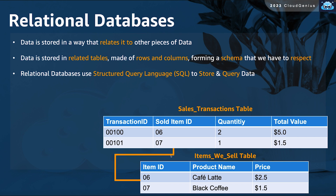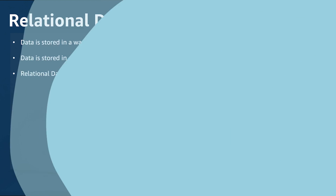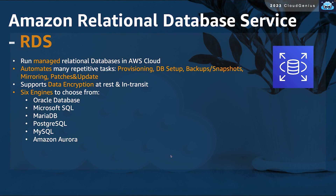You can see here in the diagram two tables: the Sales Transaction table and the Items That We Sell table, and you can see how the two tables are linked and related to each other. On AWS, we have a service known as Amazon Relational Database Service, or RDS. This is a fully managed relational database service in the AWS cloud.